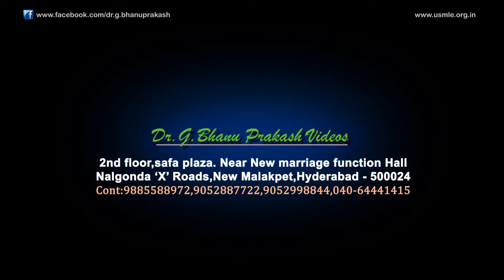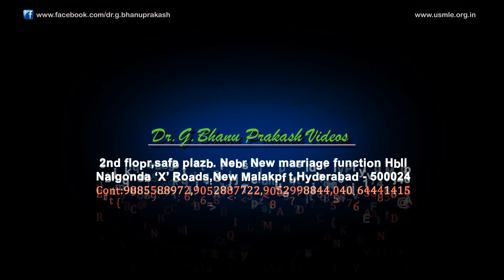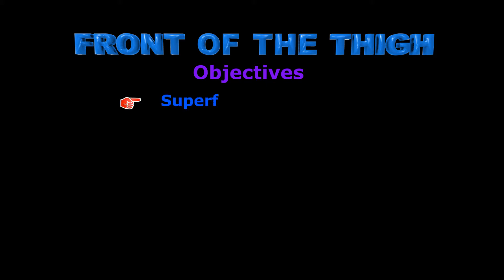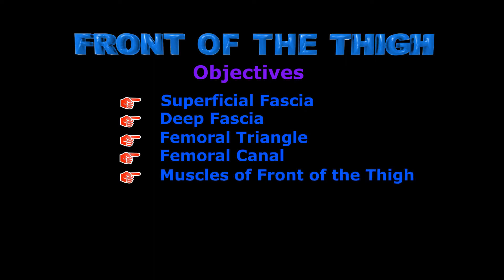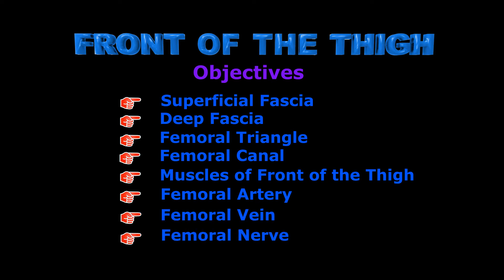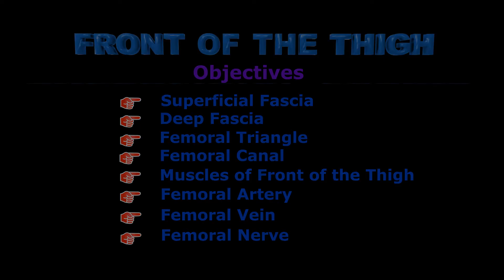Hello everyone. In today's topic we will be discussing the anatomy of the lower limb. Our today's discussion will be the front of the thigh. The objectives of today's class are: we are going to study the superficial fascia and the deep fascia, the femoral triangle and femoral canal, the muscles of the front of the thigh, along with the femoral artery, femoral vein, and femoral nerve.